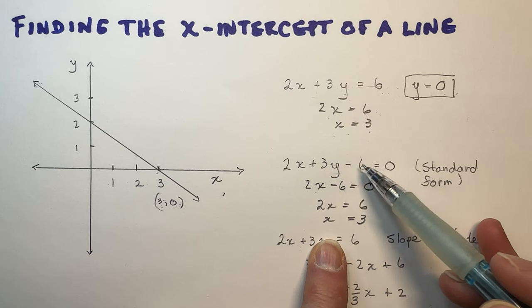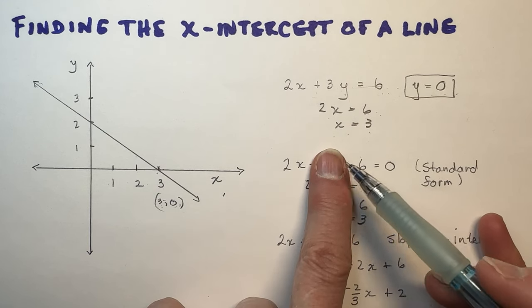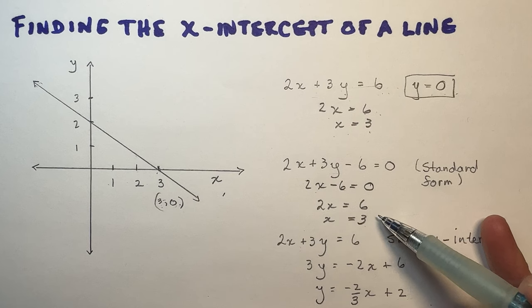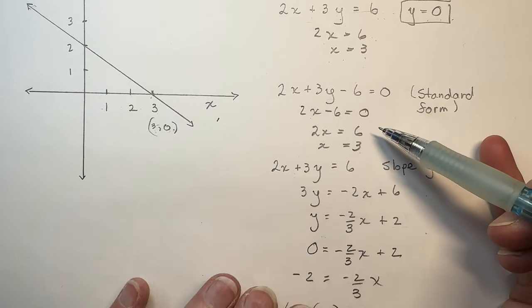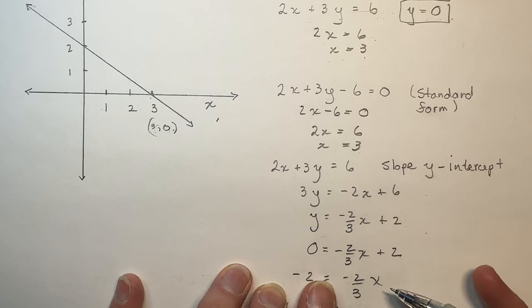It might be written in this format, in which case you're still solving by letting y equal 0. Or it's quite possible you might be given the equation—I'm using the very same one to show you the different formats.